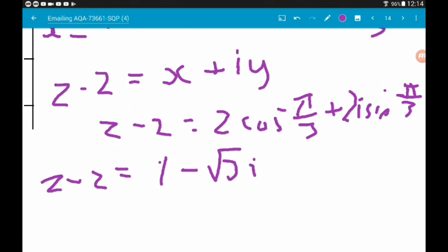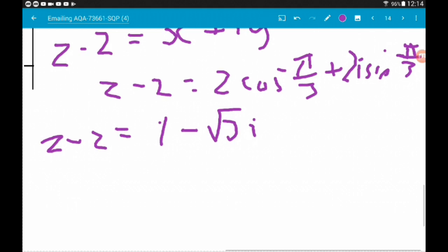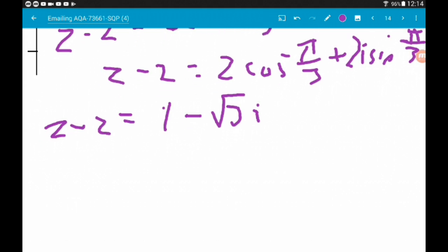So that's what z minus 2 is equal to. But we don't want z minus 2, we want z. So the last thing we need to do is add 2. Then we get z is 3 minus root 3i. Jobs a good'un.